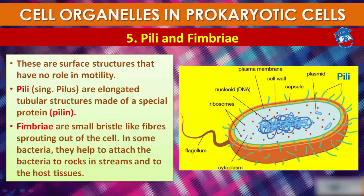Fimbriae are small bristle-like fibers sprouting out of the cell. In some bacteria, they help to attach the bacteria to rocks, streams, or host tissue. Both pili and fimbriae do not play a role in cell motility, unlike flagellum, which helps in motility.